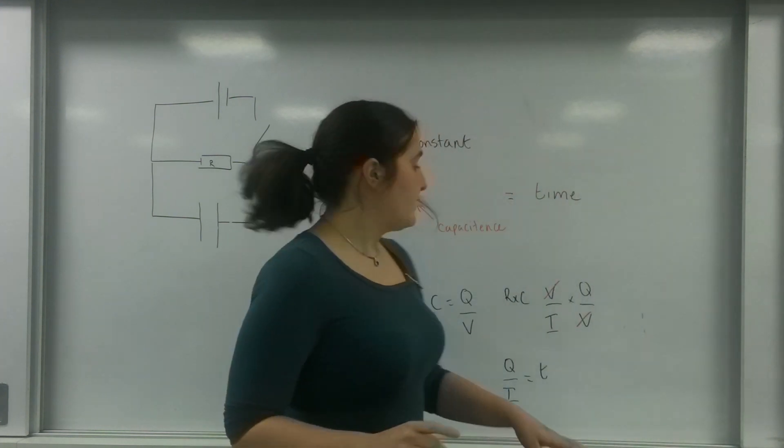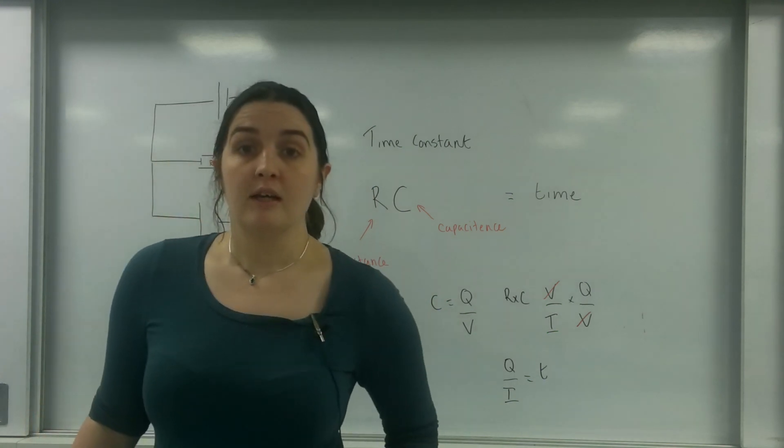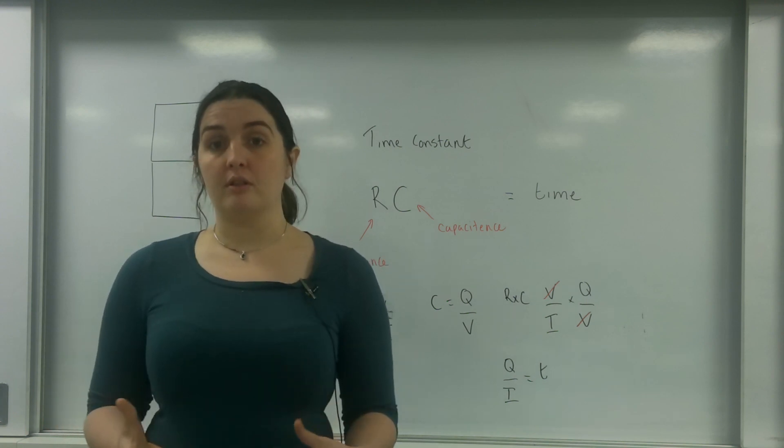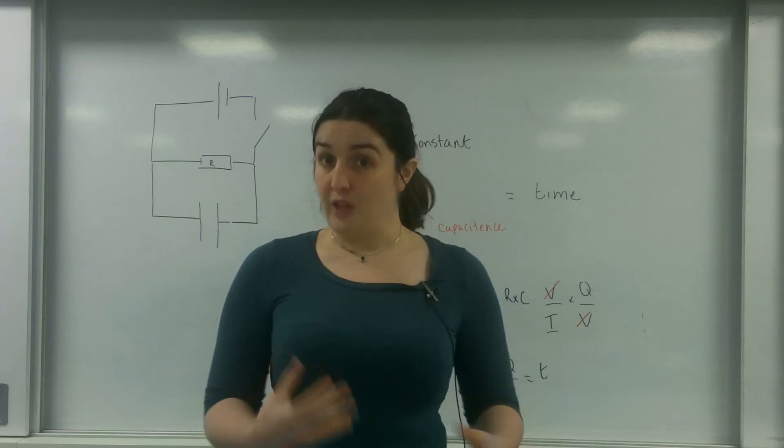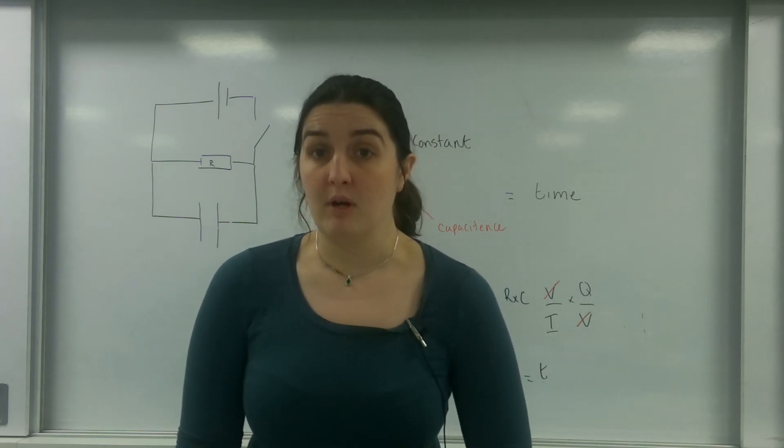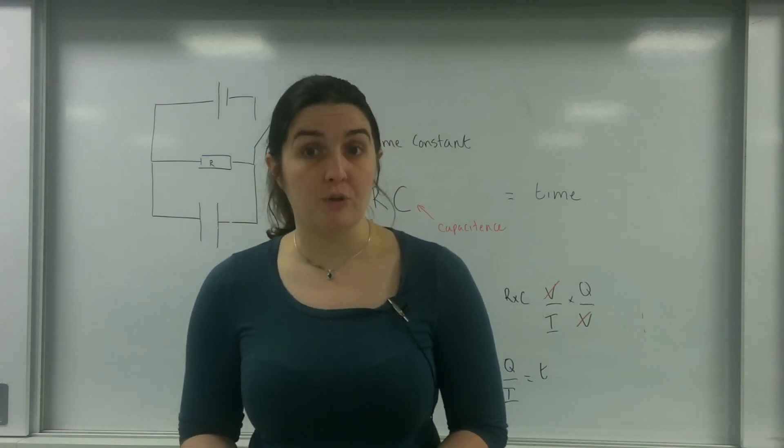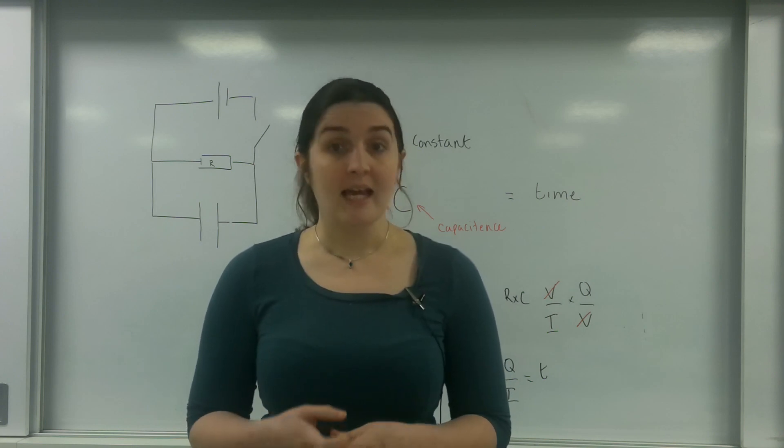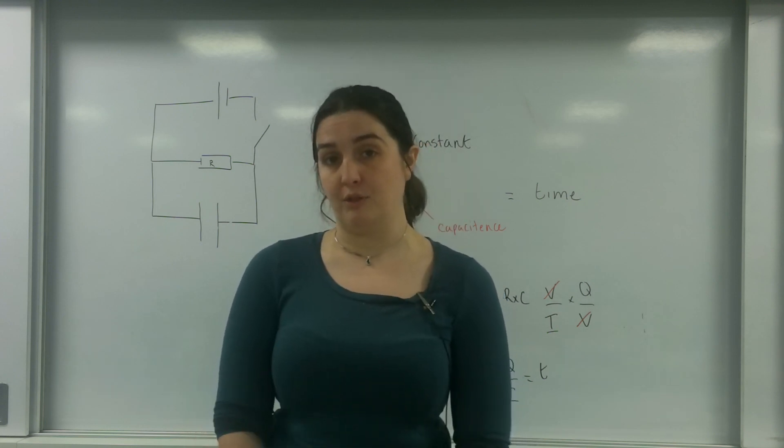What I've done there is proven why it's called the time constant. So there we have it. The time constant is a way of representing the rate of discharge in a circuit. The capacitor determines how much charge it holds, and the resistor affects how quickly the electrons leave or attach to that capacitor.